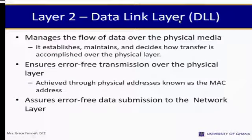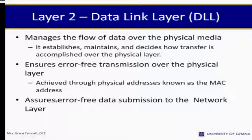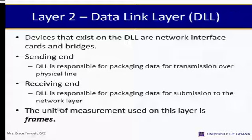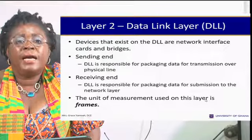Layer 2 is the data link layer, which manages the flow of data over the physical media. It establishes, maintains, and decides how transfer is accomplished over the physical layer, and ensures error-free transmission. This is achieved through a physical address known as the MAC address. At the sending end, the data link layer is responsible for packaging data for transmission over the physical line. At the receiving end, it packages data for submission to the network layer. The unit of measurement is frames.